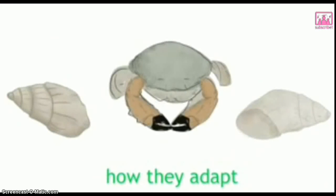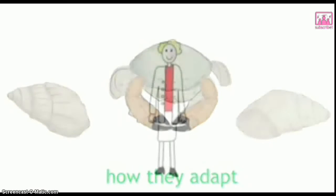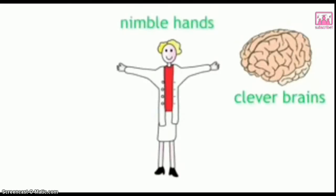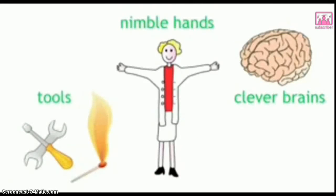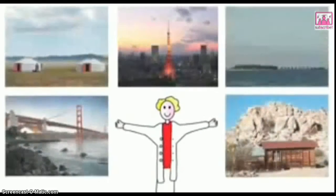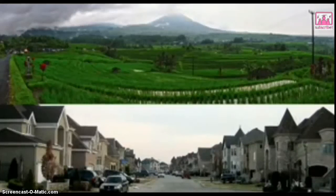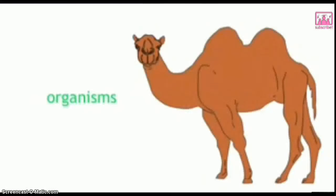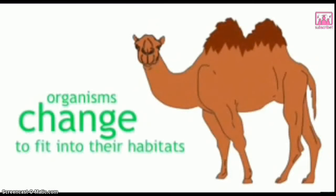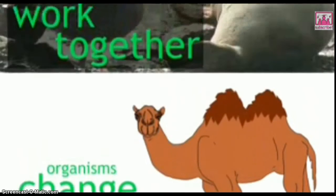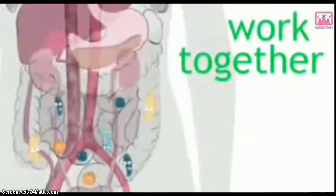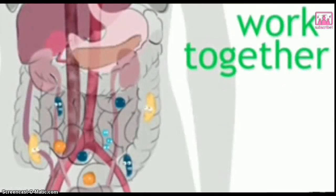We humans have adapted clever brains, nimble hands, and the use of tools, which have allowed us to survive and flourish in different environments across the Earth by changing and constructing our own habitats to suit our needs. But in addition to changing the environment, organisms themselves change over time to fit into their habitats and develop unique adaptations to survive there. Some organisms work together to survive, like the bacteria in our gut that breaks down our food in return for us providing them with a nice place to live.